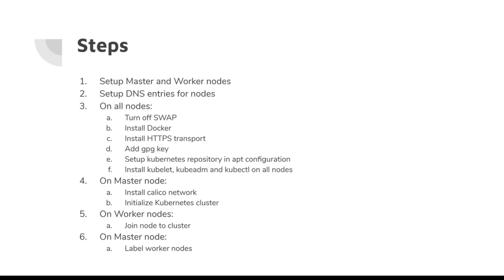On the master node you need to install the Calico network so that communication can be established between worker nodes and the master nodes, and you need to initialize the Kubernetes cluster. Once the Kubernetes cluster is initialized successfully, it will be up and running with only one node — the master node. Then switch over to the worker nodes and using the kubeadm join command, join those worker nodes into the cluster. On the master node you need to label the worker nodes as worker nodes, and with that the cluster will be available for you to consume. You can start developing applications and deploy them on the nodes.